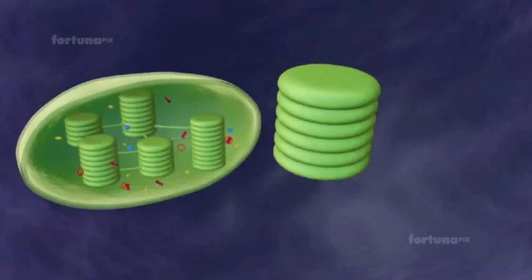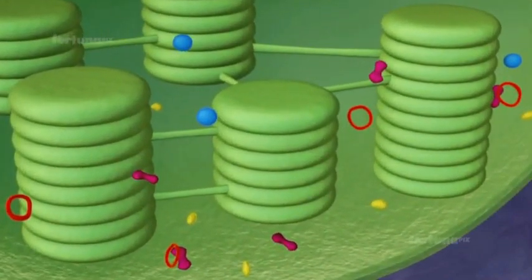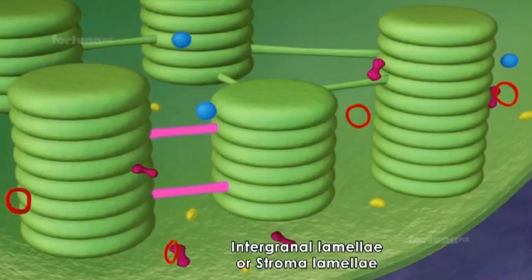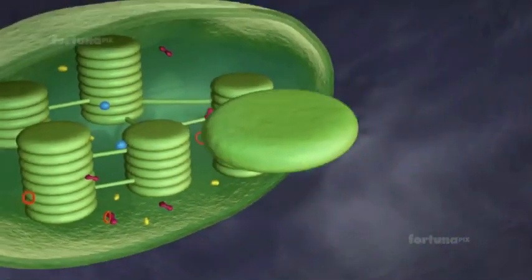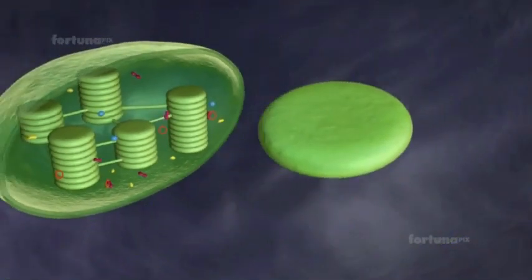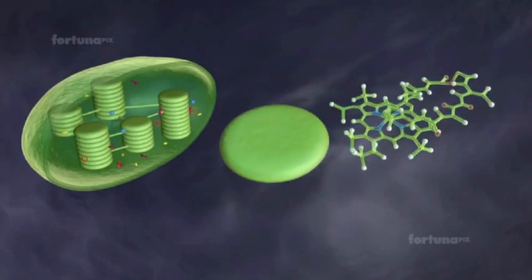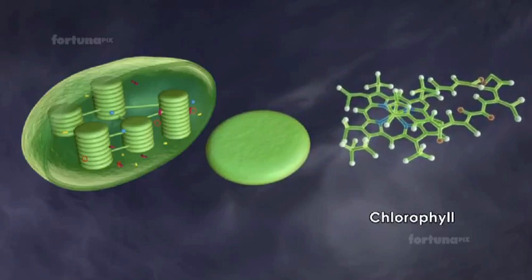Two adjacent grana are joined to one another by lamellae called intergranal lamellae or stroma lamellae. On the surface of the thylakoids, molecules of green pigment called chlorophyll are present.